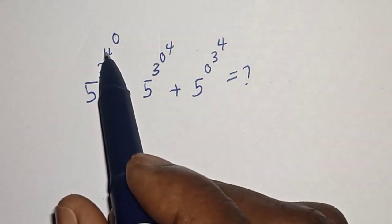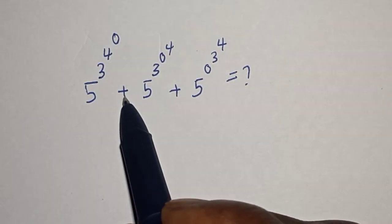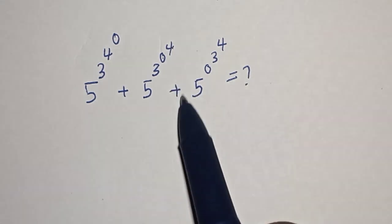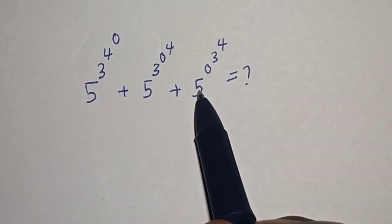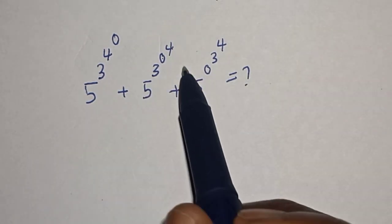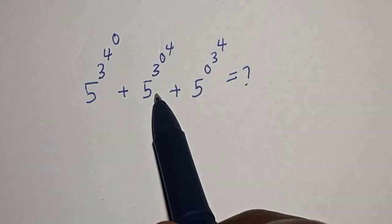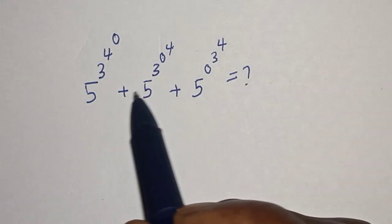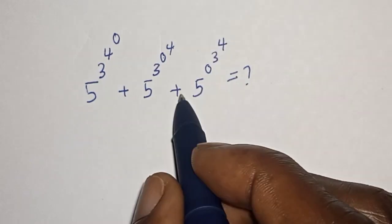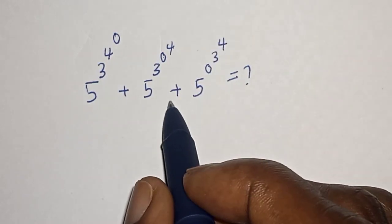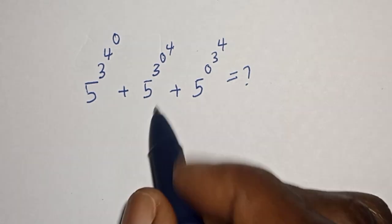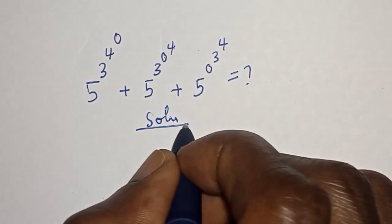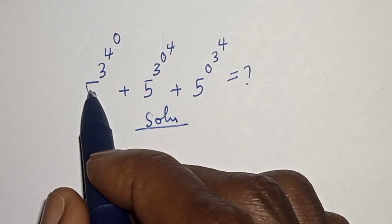Five raised to power three raised to power four raised to power zero, plus five raised to power three raised to power zero raised to power four, plus five raised to power zero. Hello, welcome to Magic. In this class, we want to evaluate this nice math problem. Before you proceed, like, share, comment and subscribe.